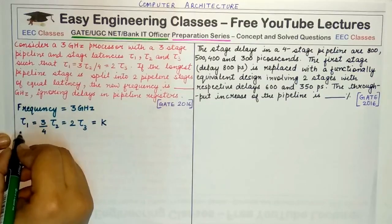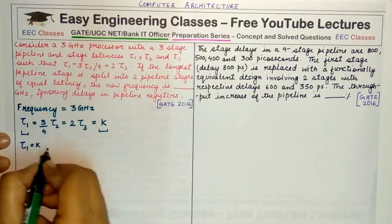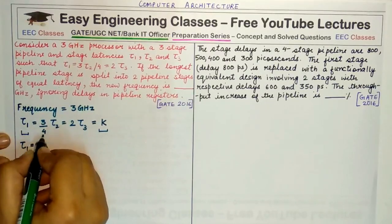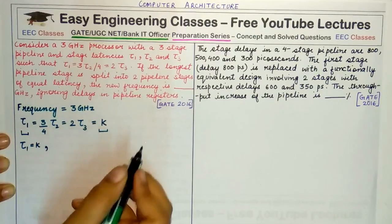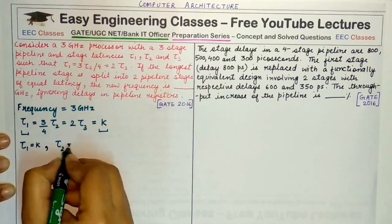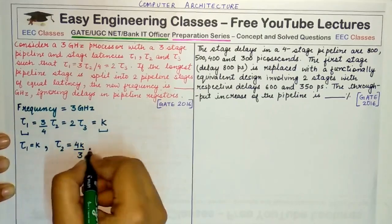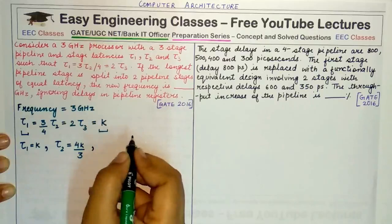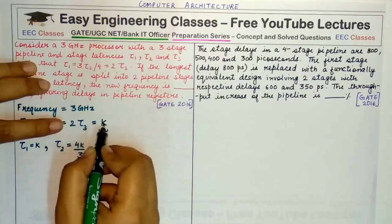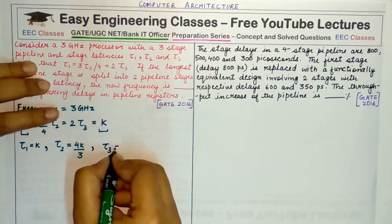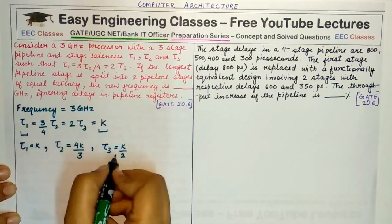Equating separately each of these three values to K: first, when I equate τ1 to K, I get τ1 = K. When I equate 3/4 τ2 = K, I get τ2 = 4K/3. And when I equate 2τ3 = K, I get τ3 = K/2. These are the values of each of these latencies in terms of K.